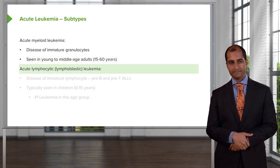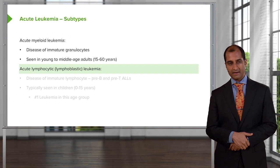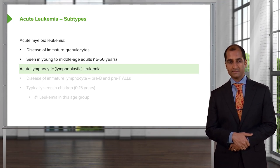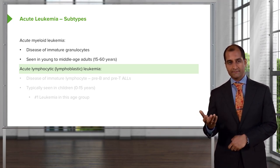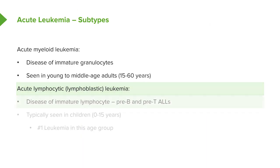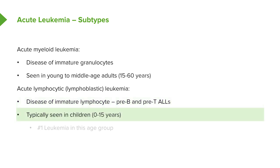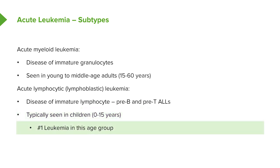The other type of acute leukemia is acute lymphoblastic leukemia, or ALL. We call it lymphoblastic because you find greater than 20% blasts in the bone marrow. Since we're dealing with ALL — lympho — there are only two types: T-type and B-type. If it's AML, there are seven different subtypes because there are seven different myeloid cell lineages. ALL is a disease of immature lymphocytes — pre-B or pre-T — and it's the youngest leukemia-causing cancer, typically in patients less than 15 years of age. It's the number one leukemia in that age group.